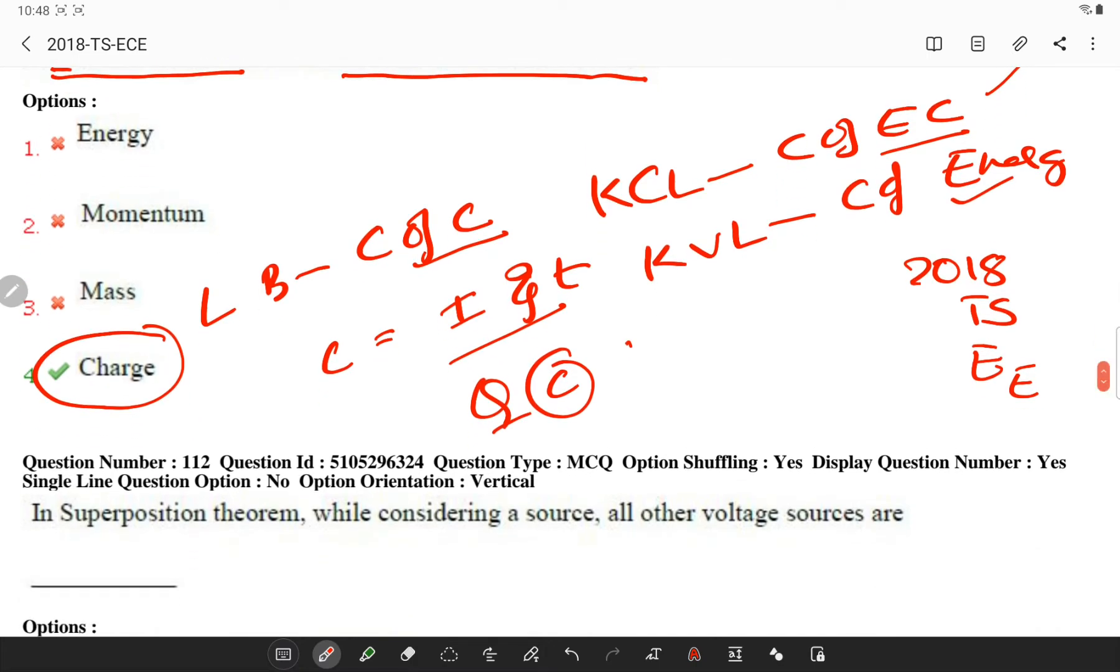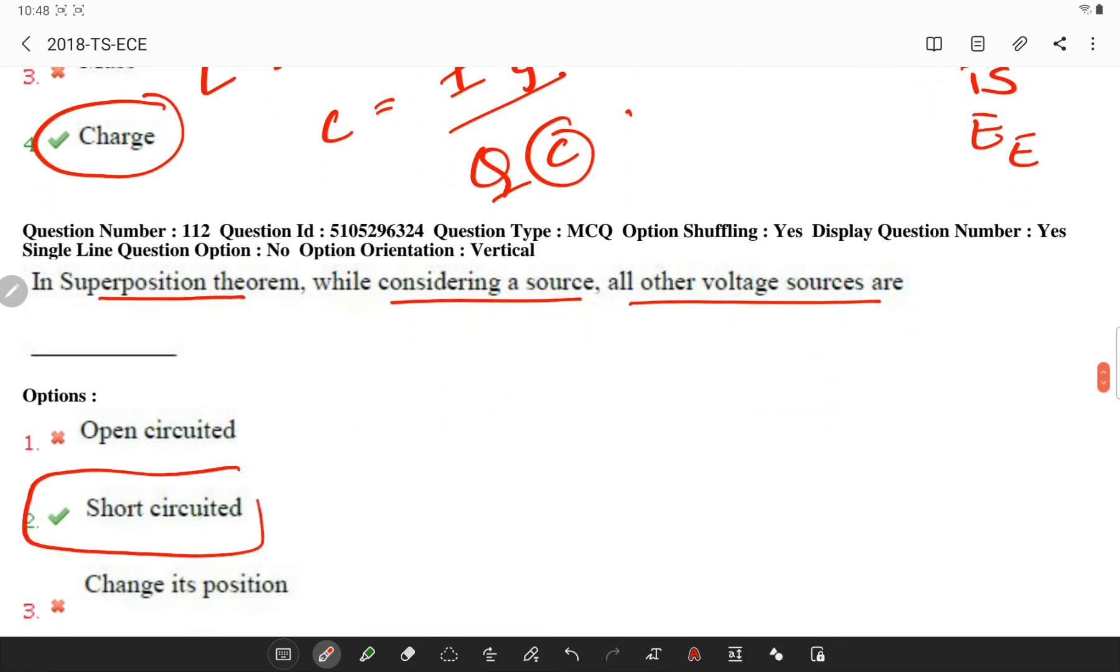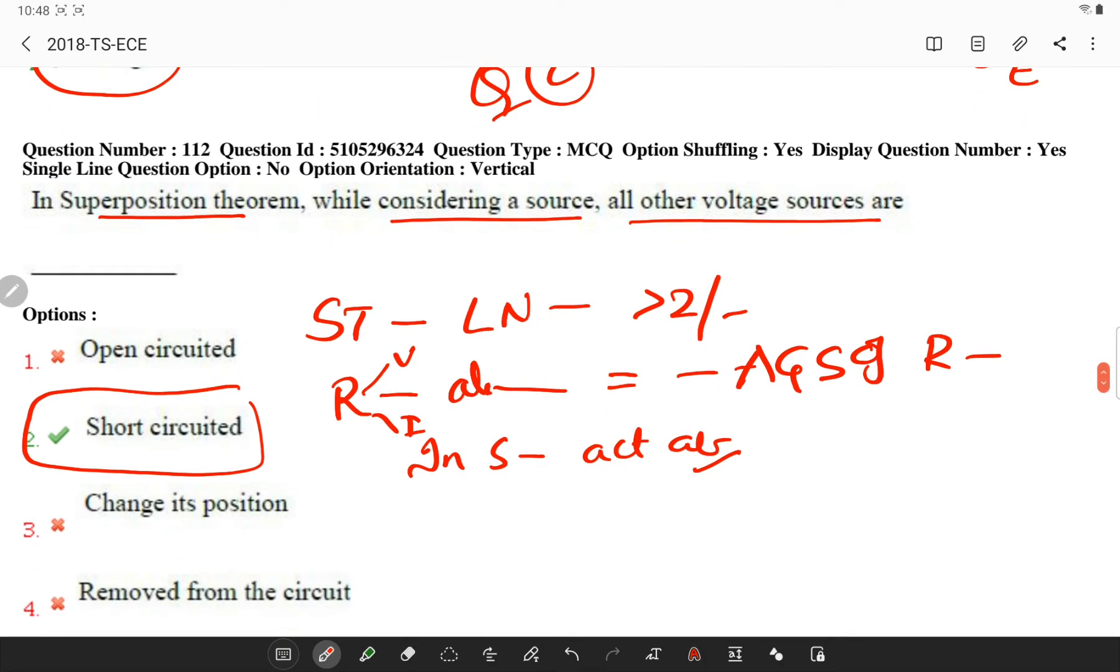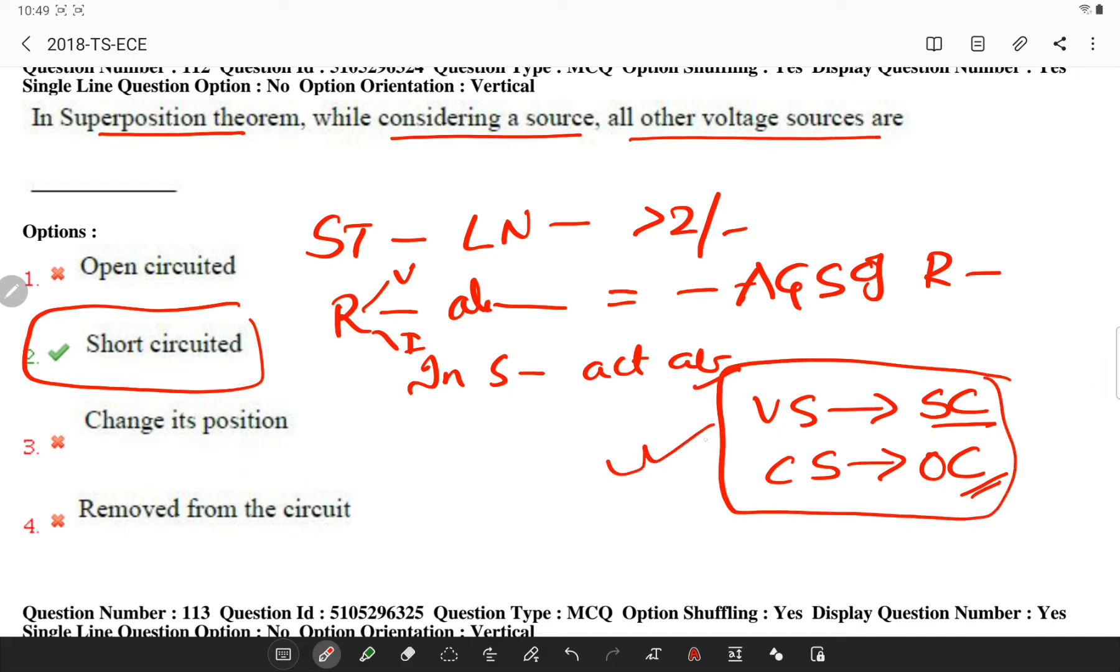In superposition theorem, while considering a source, all other voltage sources are generally short-circuited. In superposition theorem, linear network containing more than two or greater than two or more sources, the response in any element can be, response can be voltage or current, in any element is equal to algebraic sum of responses caused by individual sources acting alone, while other sources are non-operative. Considering all the voltage sources are short-circuited and all the current sources are open-circuited. Remember these two terms. This is related to the internal impedance.